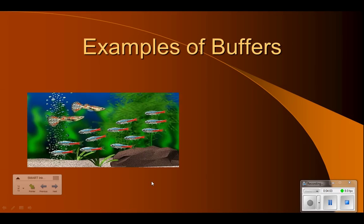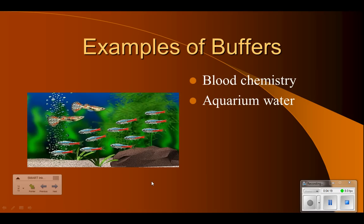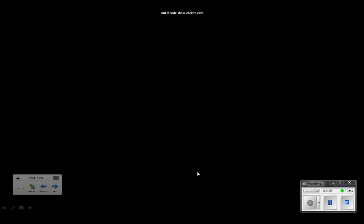Buffers are also used in several real-world contexts. Your blood is buffered so that consuming acidic or basic foods doesn't dramatically change your blood chemistry — a large shift in blood pH could be deadly. Aquarium water is buffered, as shown earlier with the aquarium buffer product; neon tetras, for example, are sensitive to water pH. Aspirin is the example already discussed. And acid rain falling on rocks will react with the carbonates in those rocks, reducing some of the acidity as the rain percolates through the ground and soil.